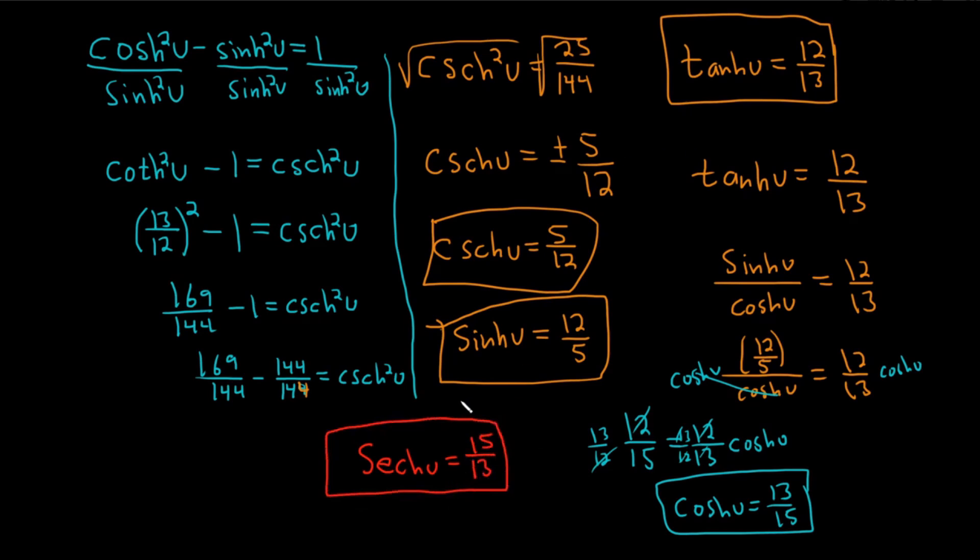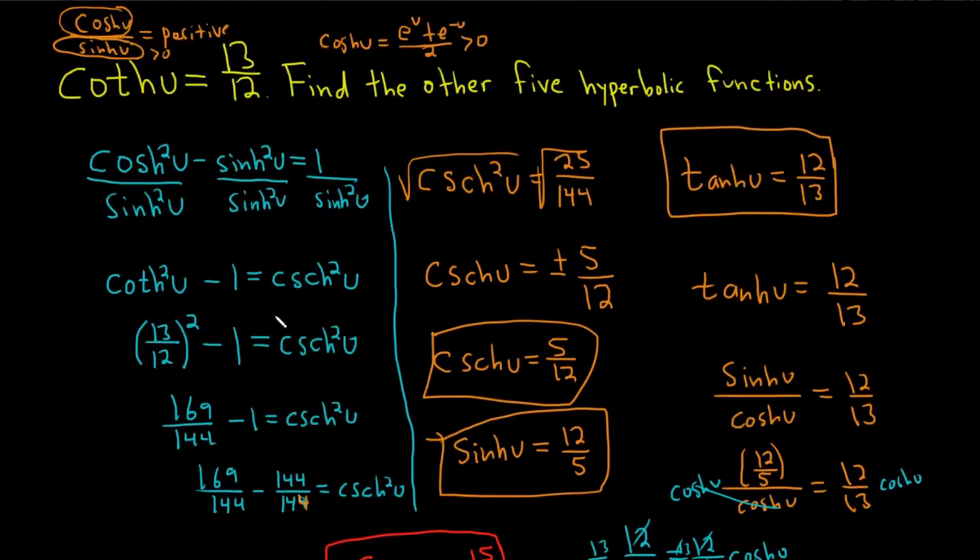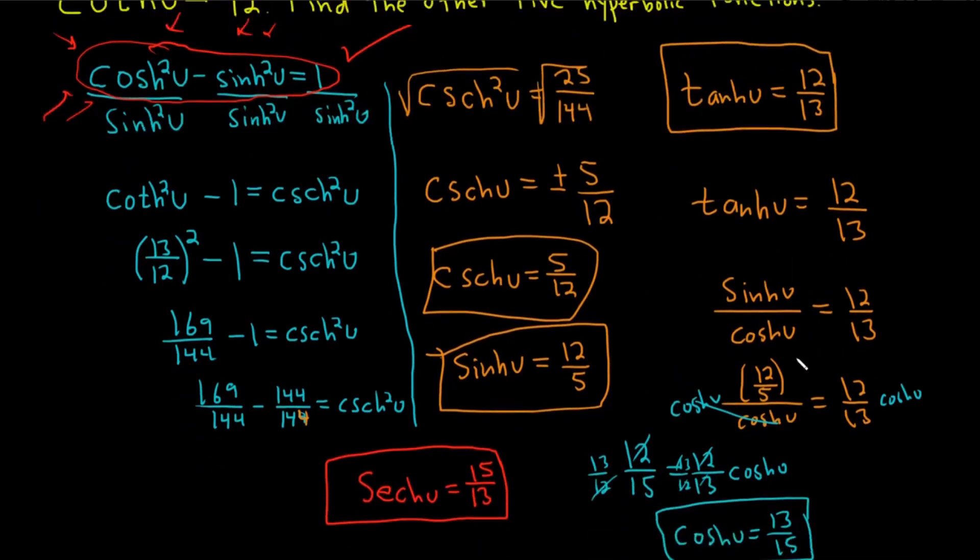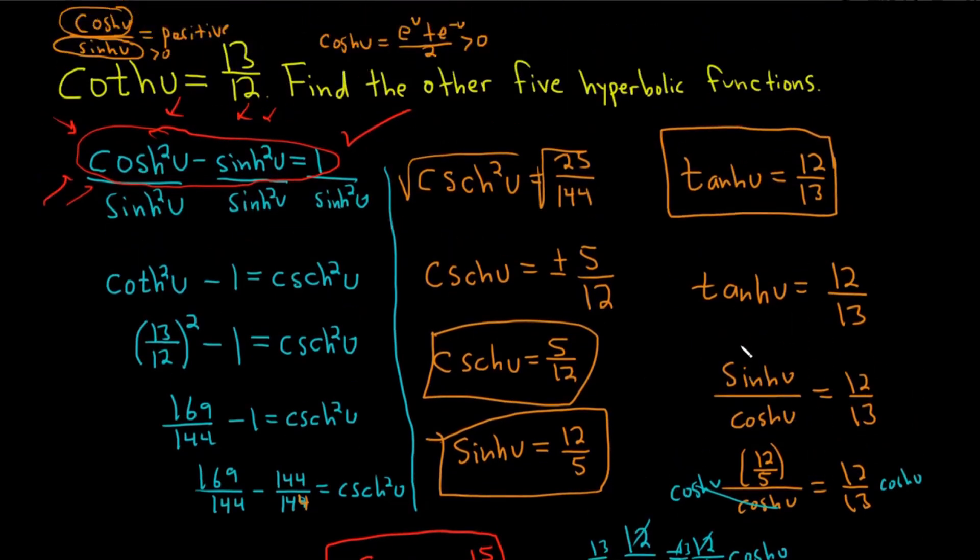And I think the key point in this problem is whenever you see something like this and you don't know the identity, start with one you probably do know. And if you didn't know it, well, now you do. So totally worth memorizing. If there's any identity you should know, this is one, because you can manipulate this one to get the other ones. And then once you have some stuff, you can use what you have to figure out the rest. I hope this video has been helpful to someone out there in the world. Good luck.